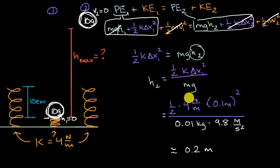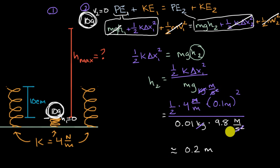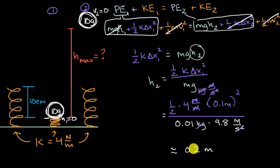The units work out: treating newtons as kilogram·meters per second squared, the kilograms cancel, the per second squared terms cancel, and one meter cancels, leaving meters squared over meters — just meters. We've found the maximum height using conservation of energy is approximately 0.2 meters.